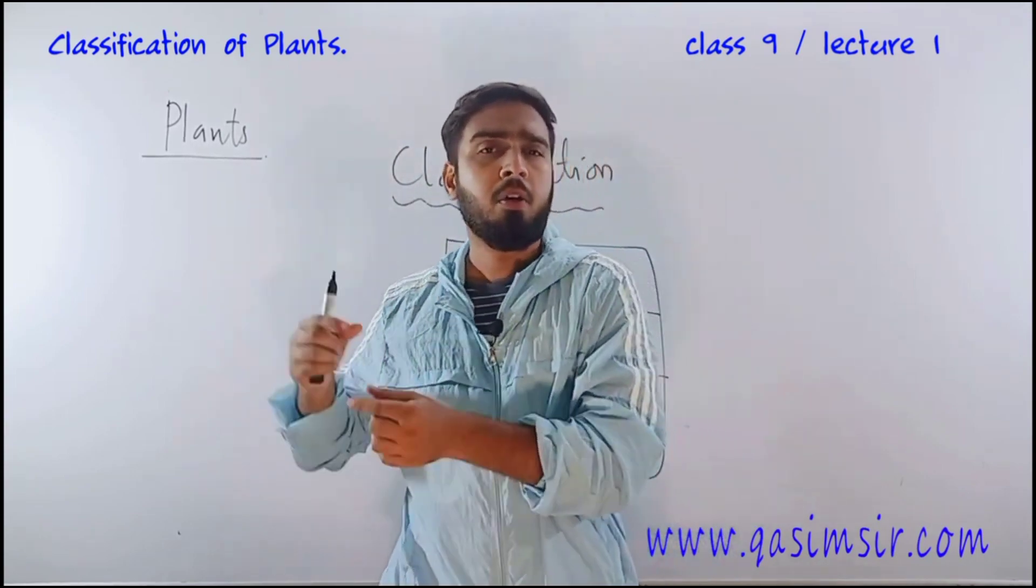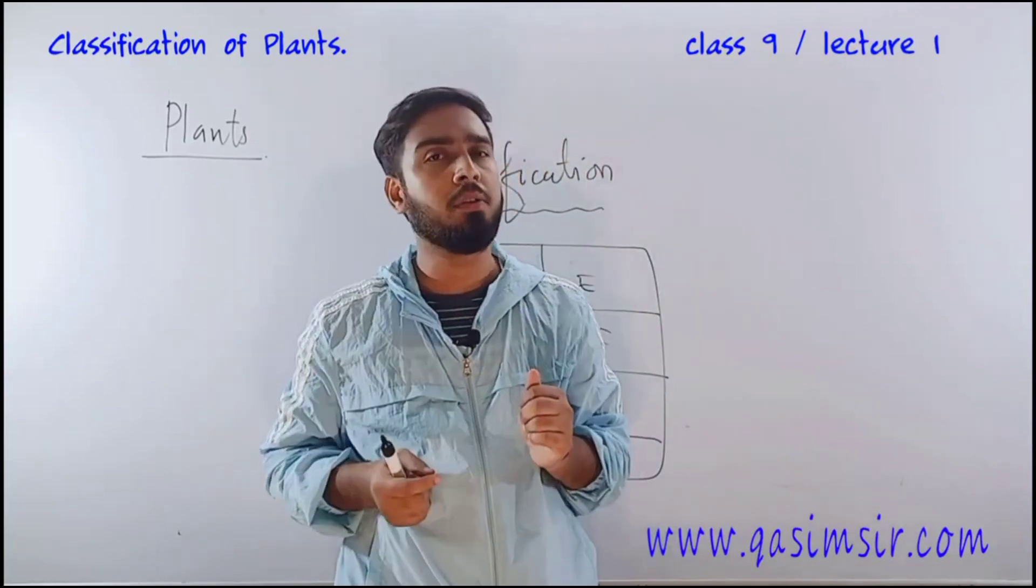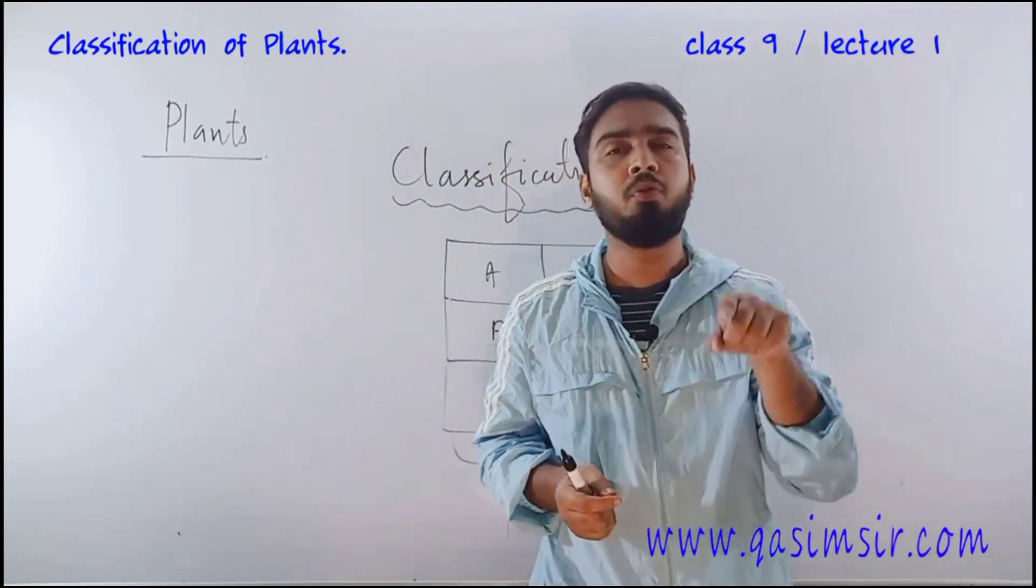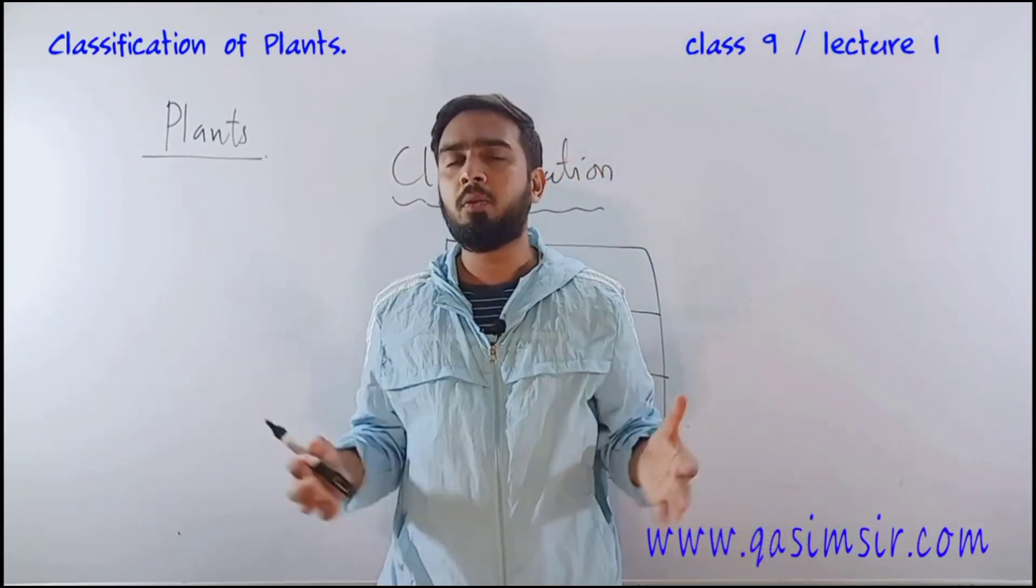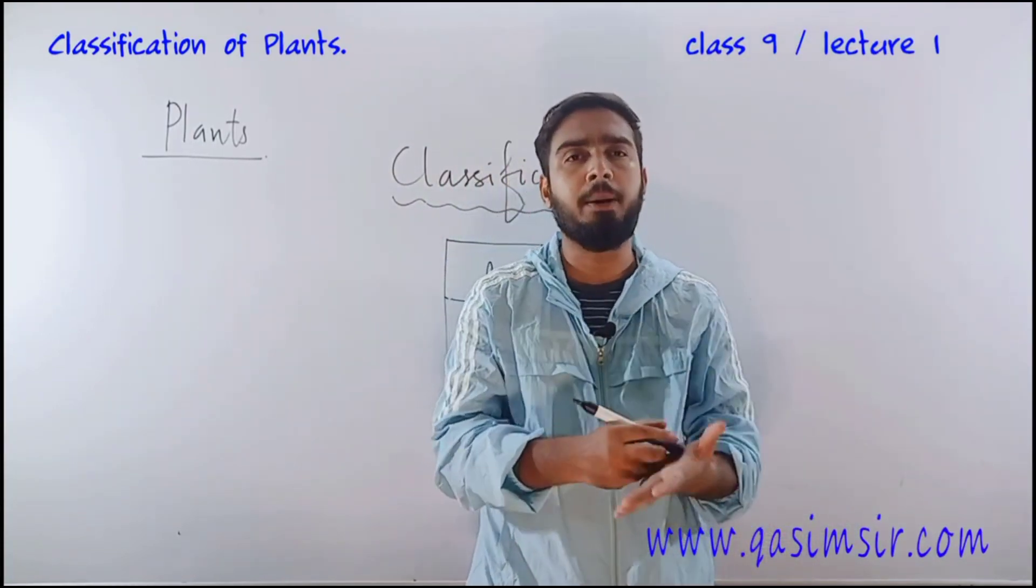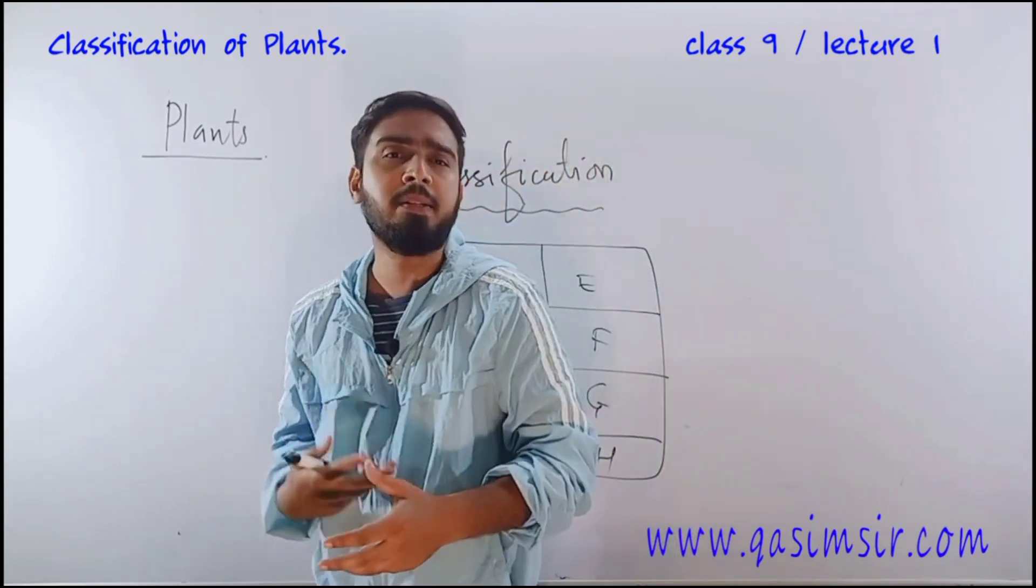On the ticket, all information is written properly - your bogie number, seat number, middle berth, upper, lower - all the division is written there. That will help you to search out where exactly your seat is.